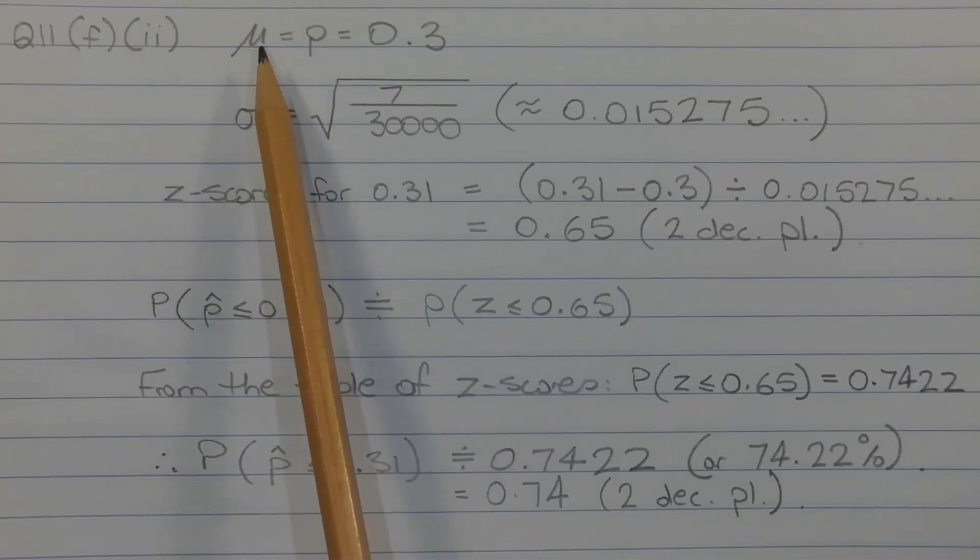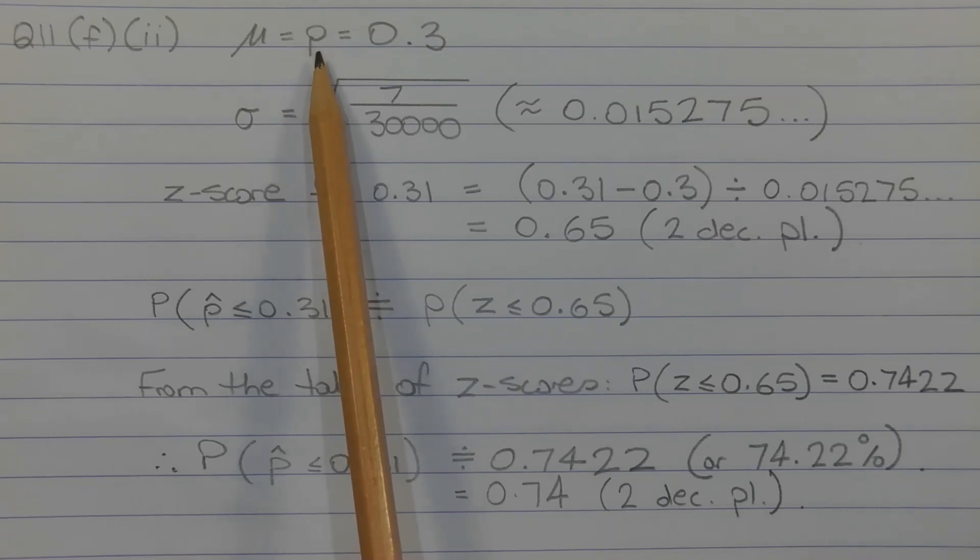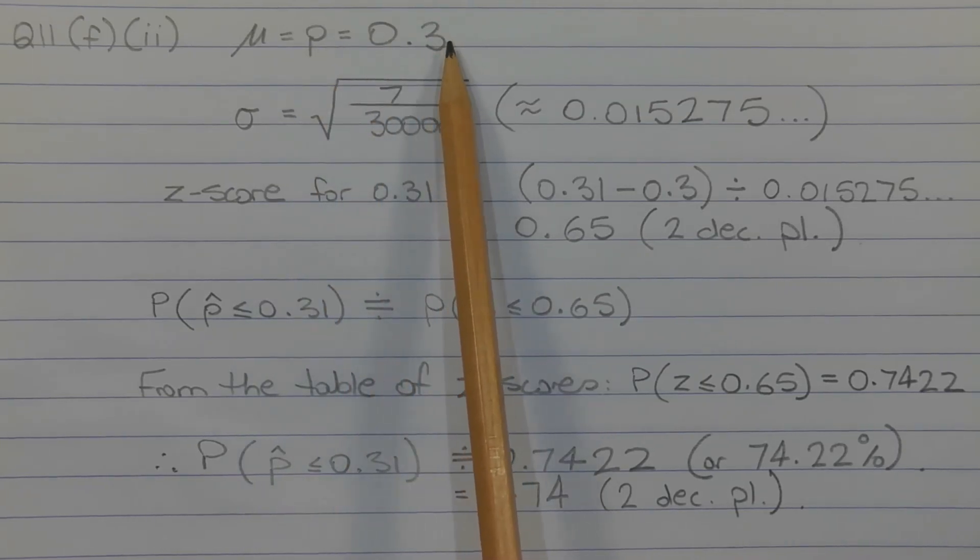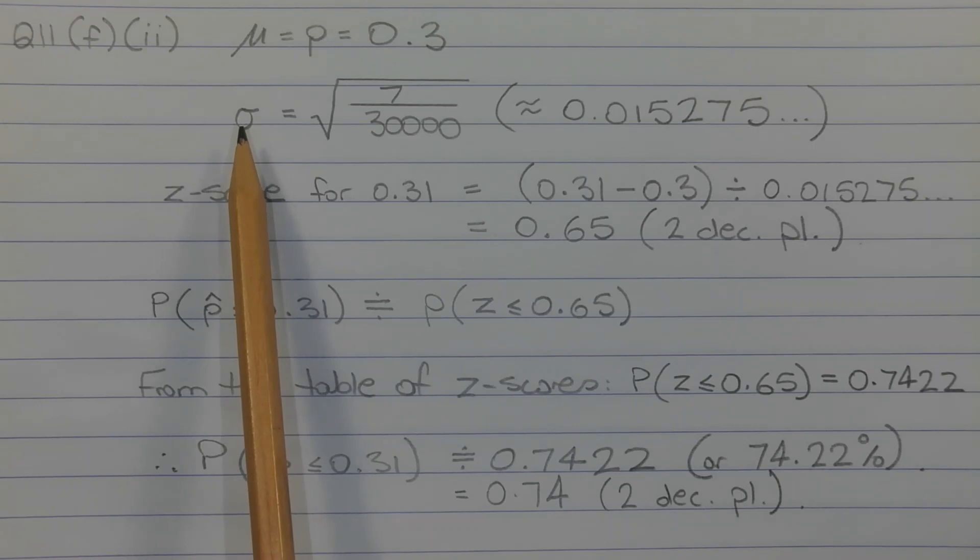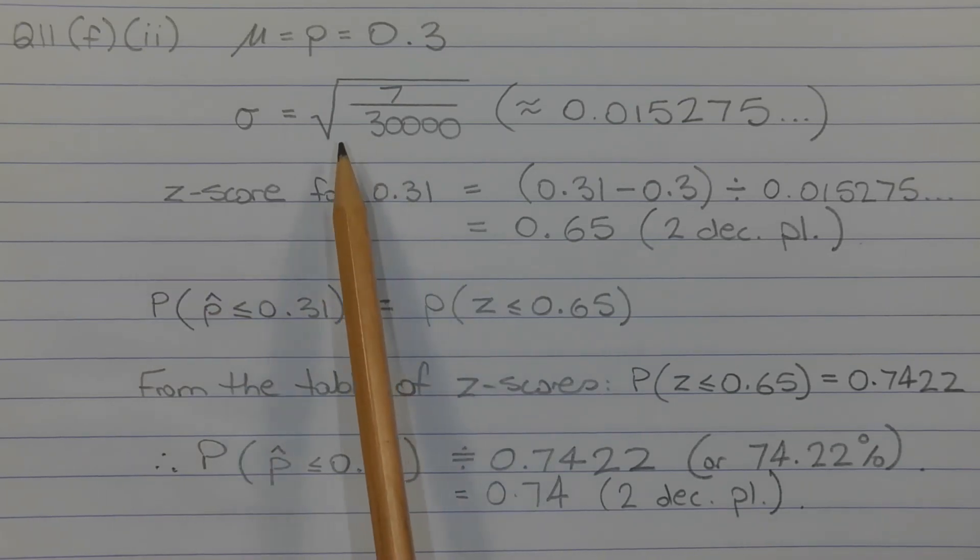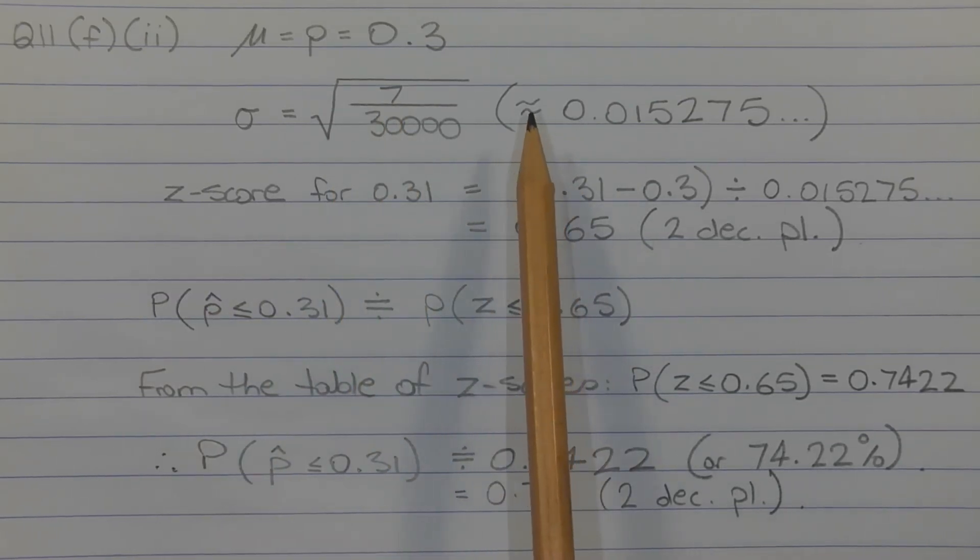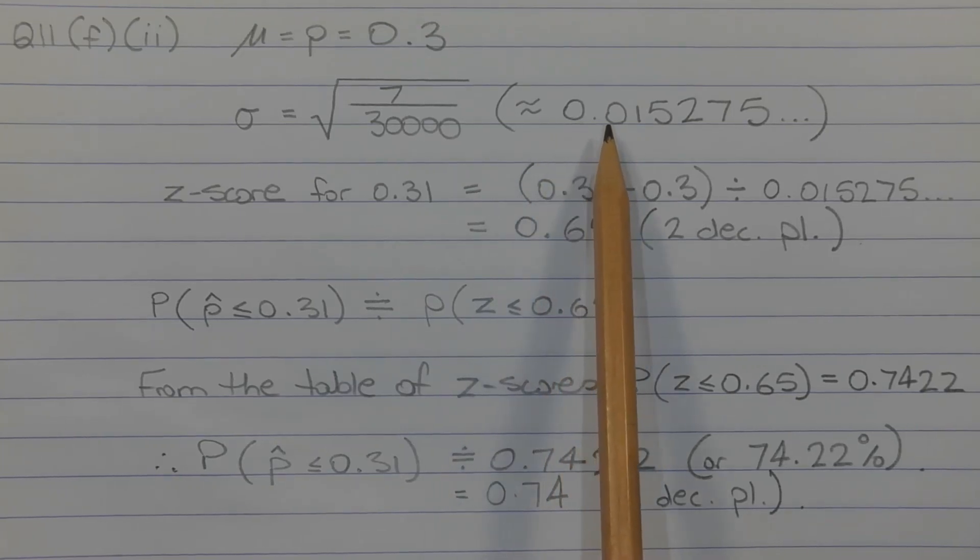The mean mu is equal to the population proportion P, which is equal to 0.3. Now the standard deviation, sigma, is equal to the square root of the variance that we found in part 1, which is the square root of 7 over 30,000. And as a decimal, that's approximately equal to 0.015275 and so on.